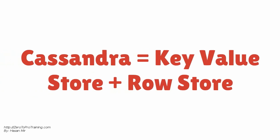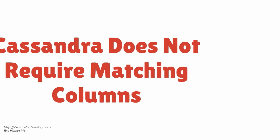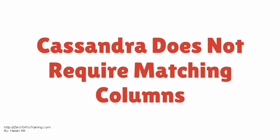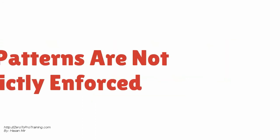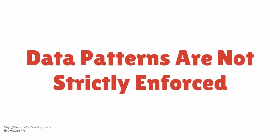It has become a hybrid product containing common properties of two types of databases: a key-value store and a row store. Unlike a relational database management system, Cassandra does not require matching columns within a row. Data patterns are not strictly enforced.